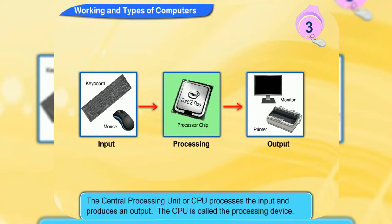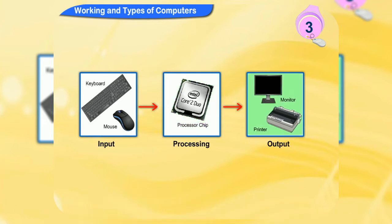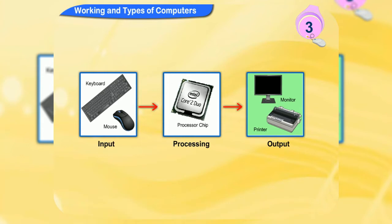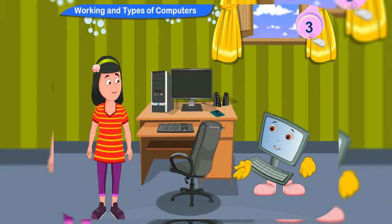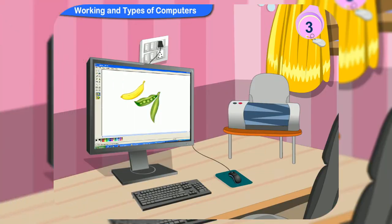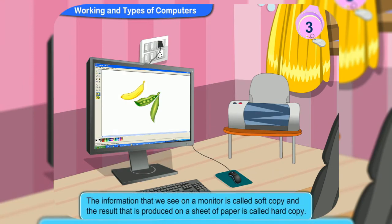It is also called the brain of the computer, as it controls all parts of the computer system. The monitor displays the result, and the printer can print the result on a sheet of paper. So these two parts are called output devices. Also keep in mind the difference between a soft copy and a hard copy. The information that we see on a monitor is called soft copy, and the result produced on a sheet of paper is called hard copy.